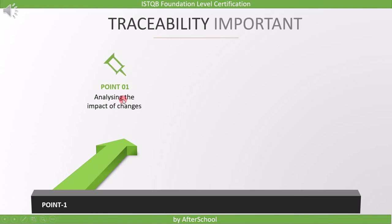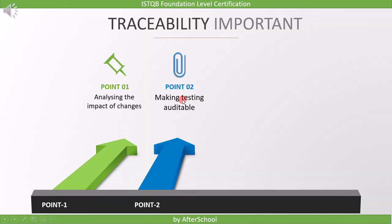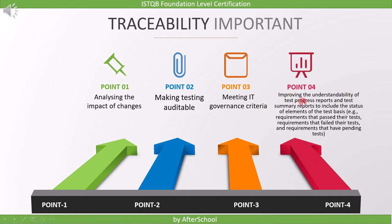First point is analyzing the impact of change. Suppose there is a change in the requirement — then due to traceability, we will come to know which all work products are affected, and for the base we will update them. Second point is making testing auditable. Since every item is linked, it is easy while auditing the project. Point number 3 is meeting IT governance criteria. Fourth point is improving the understandability of test progress reports and test summary reports to include the status of elements of the test basis — for example, requirements that passed their tests, requirements that failed their tests, and requirements that have pending tests.